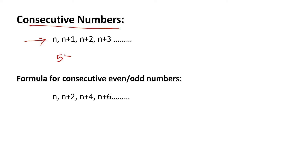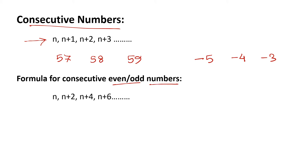Examples of consecutive numbers: 57, 58, 59; also negative consecutive numbers: minus 5, minus 4, minus 3. These are consecutive numbers.